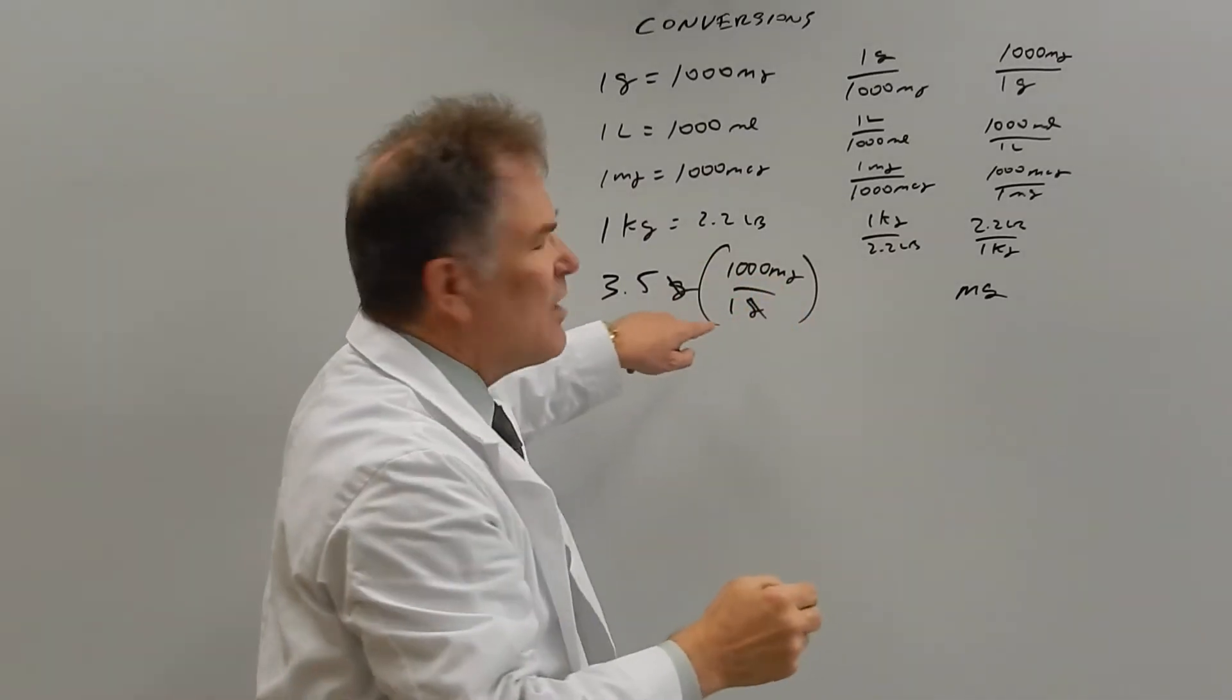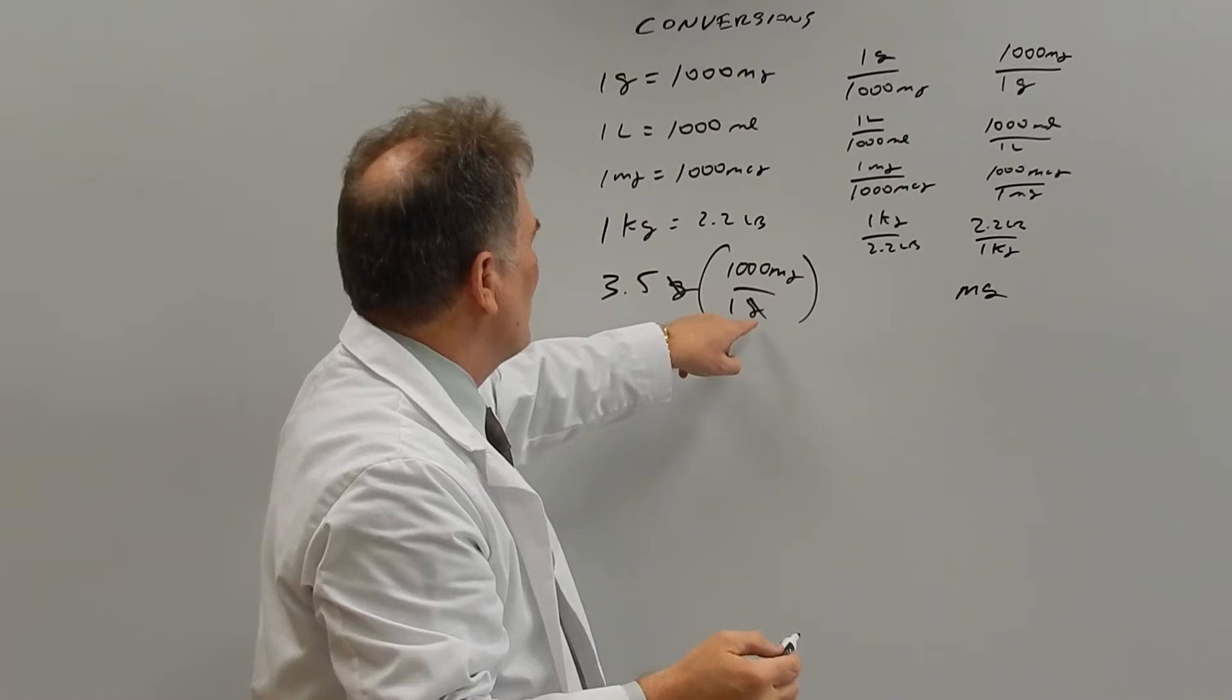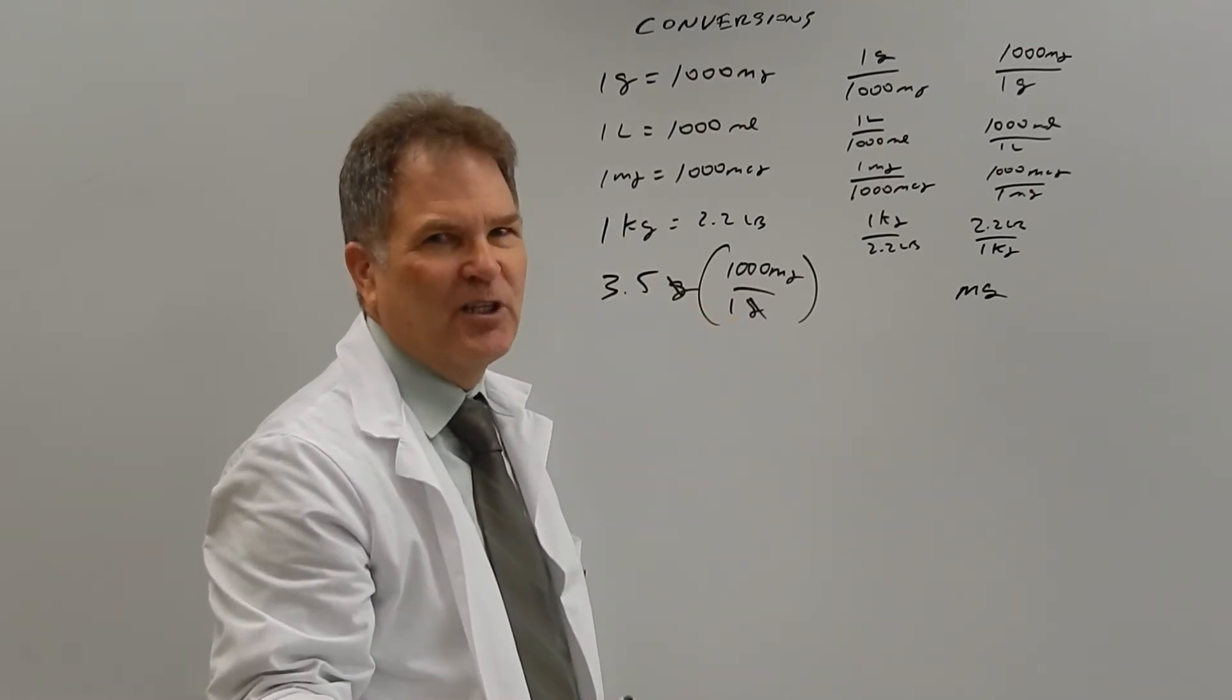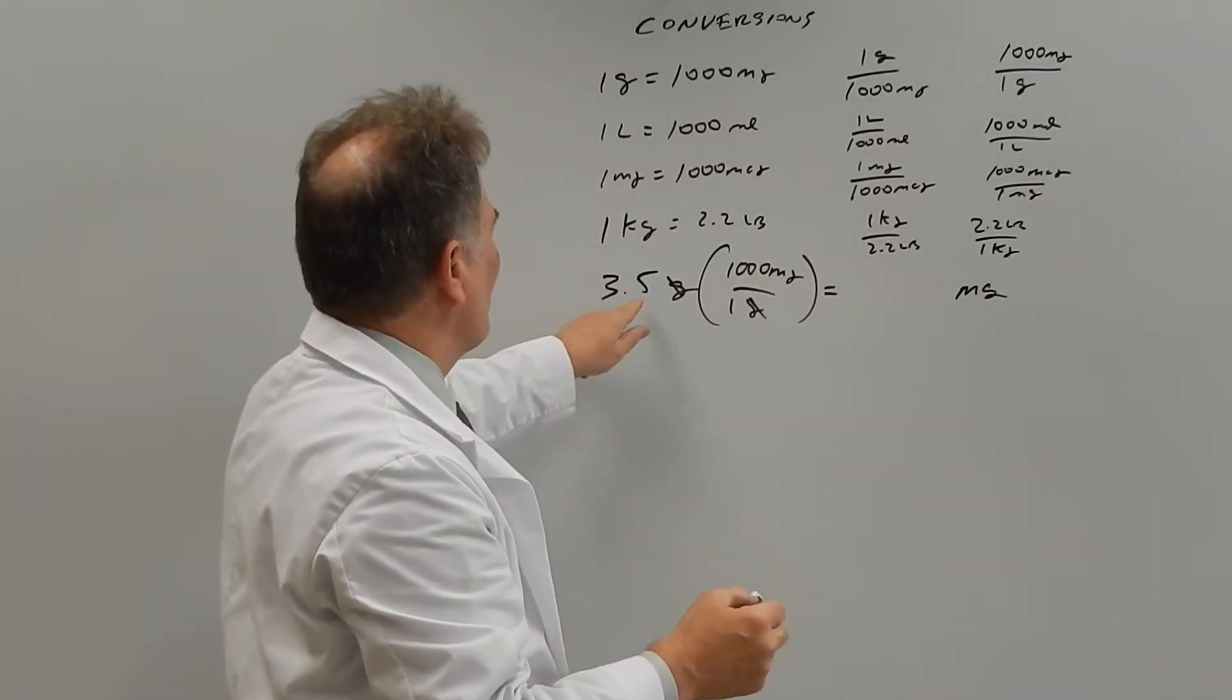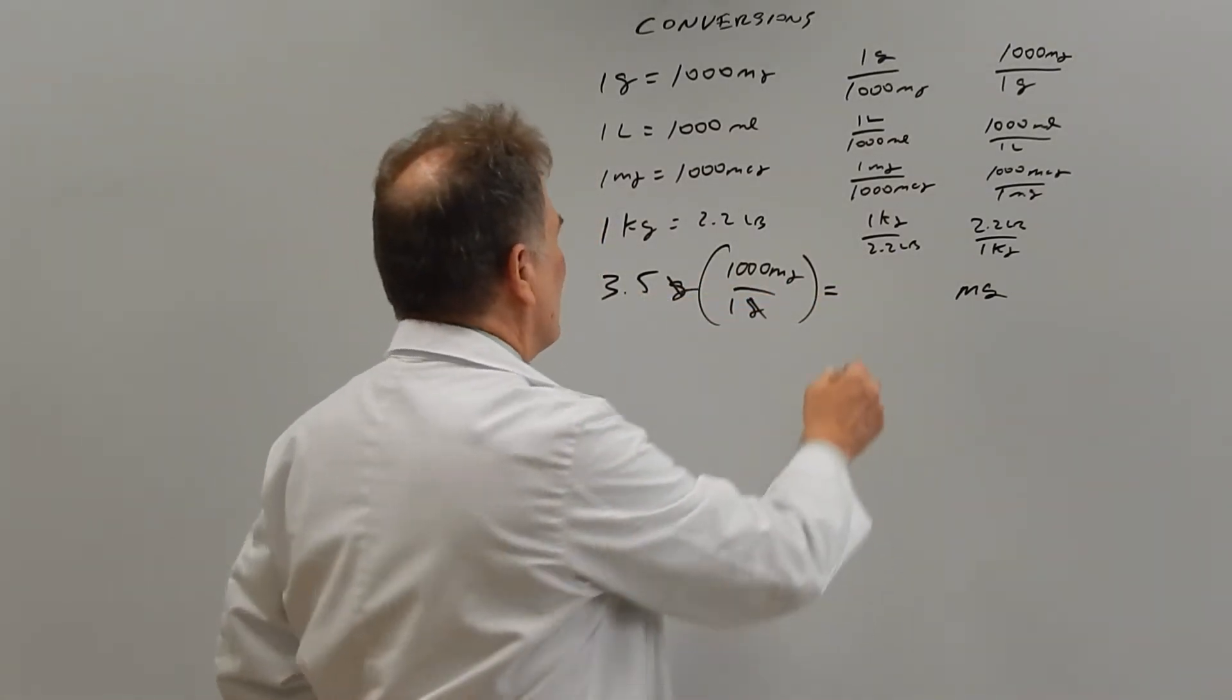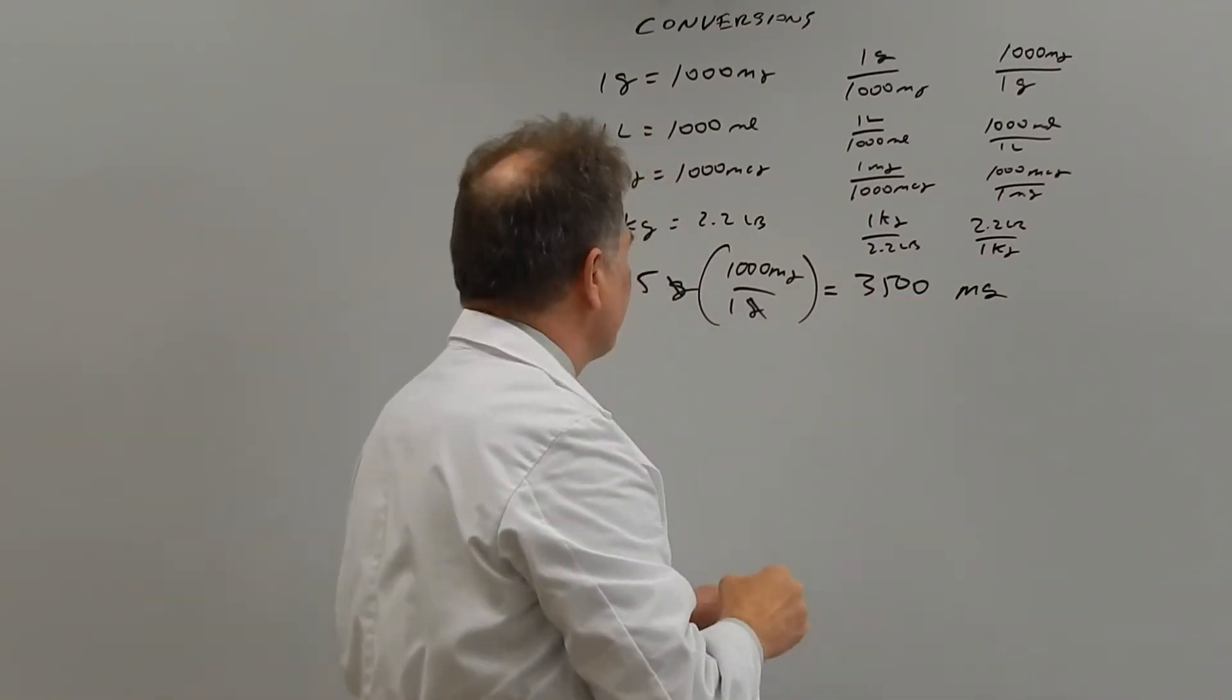Okay. So anything divided by itself is 1. So the grams are divided by a gram, so they cancel themselves out. And we're left with milligrams. So now all we have to do is multiply 3.5 times 1,000, and we get 3,500 milligrams.